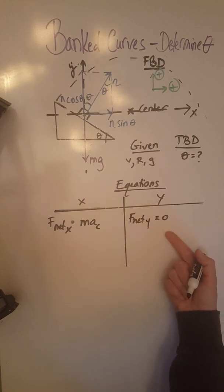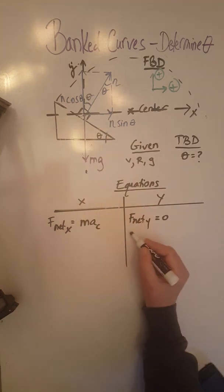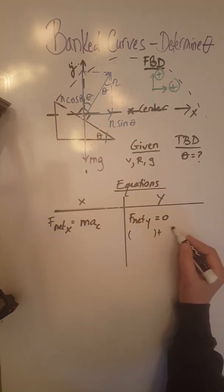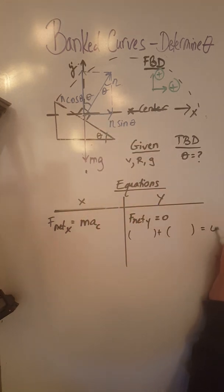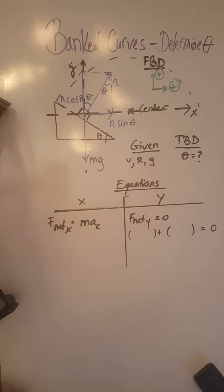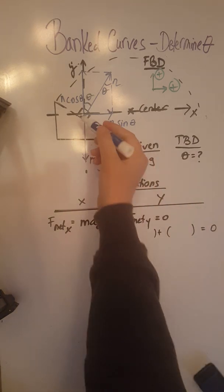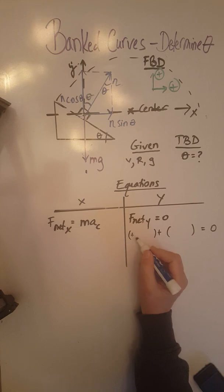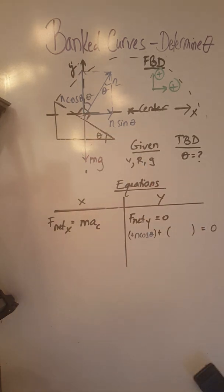I'm going to continue with the y forces. We have two forces whose vector sum is zero, so add them up equals zero. Let's see what those two forces are. n cosine theta is positive and mg is negative.